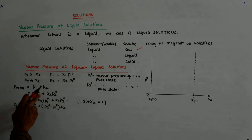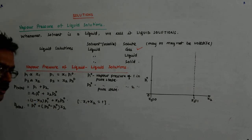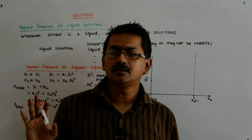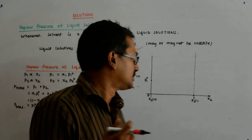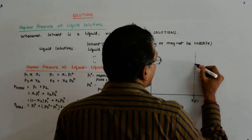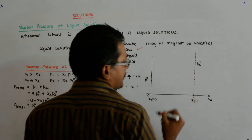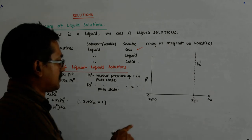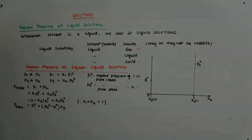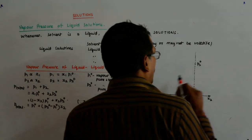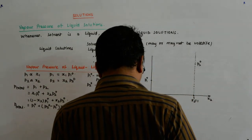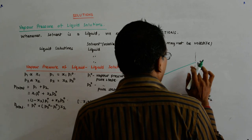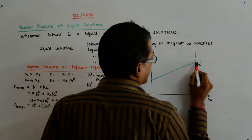When x2 goes to 1, it means only the second component is present and the first component is gone. So the total contribution will be P2°. At x2 = 1, we have pressure P2°. So my plot will be a straight line going from P1° at x2 = 0 down to P2° at x2 = 1.